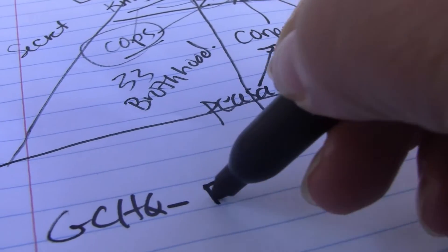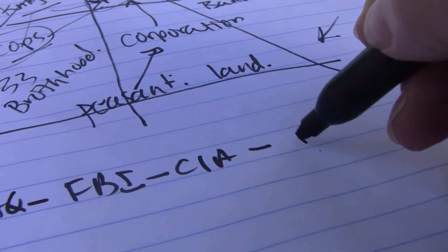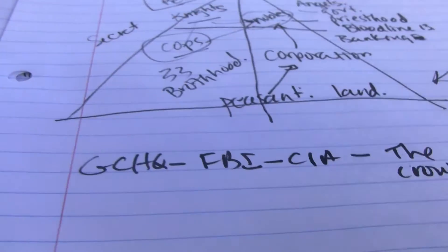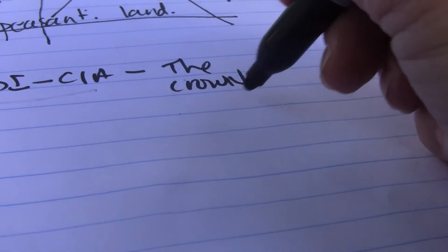GCHQ. FBI. CIA. The crown. These are all secret spy agencies. They work for the crown. The crown is owned by the Vatican.